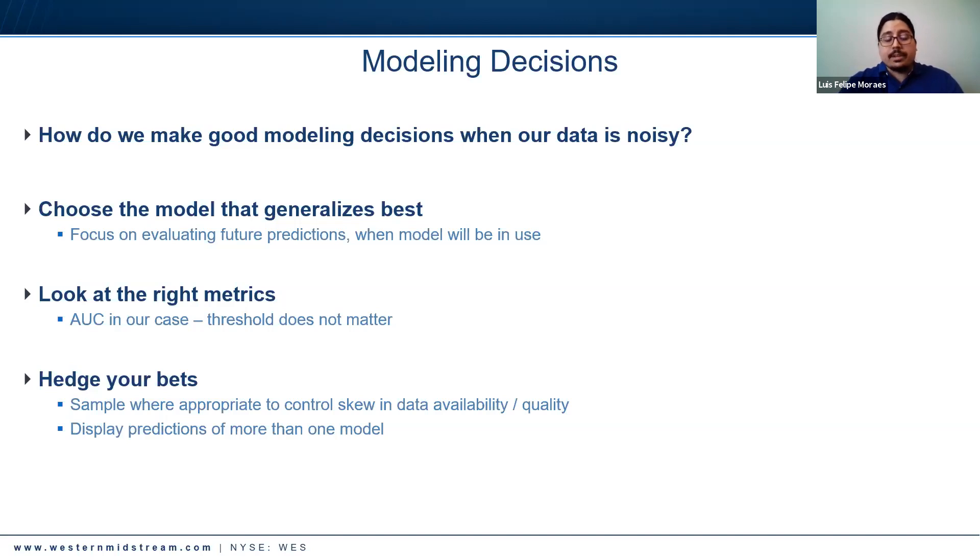Also, hedge your bets whenever you can. We sampled where appropriate to control skew in data availability and quality. For instance, if some facility is having more issues than another facility, make sure you uniformly sample among the facilities so one of them does not overcrowd your training. Also, we displayed predictions of more than one model, also hedging our bets there.